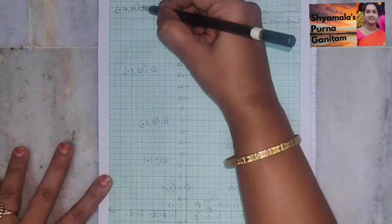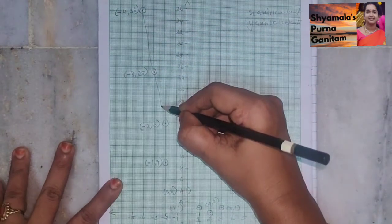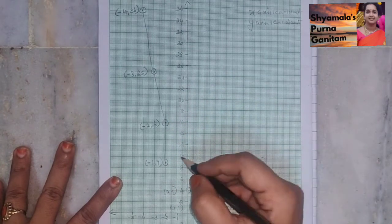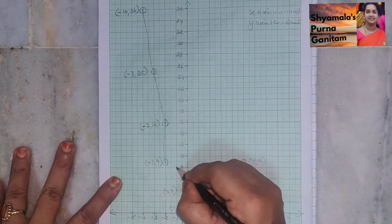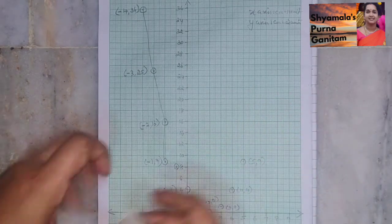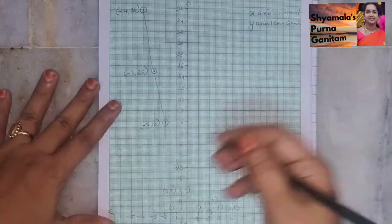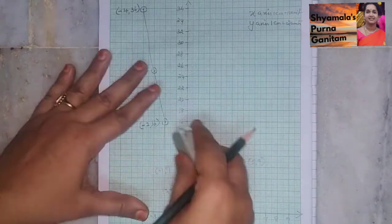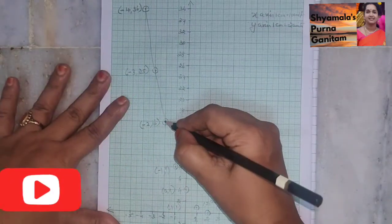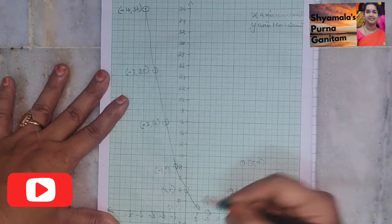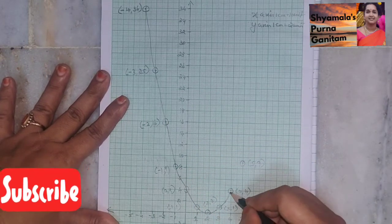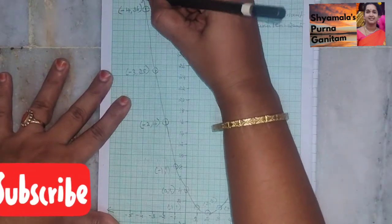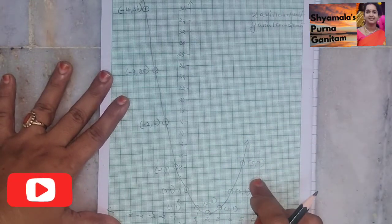Now we will join all these points carefully so that we get a perfect graph. We got a parabola — a U shape. We have to plot it carefully to get the correct parabola.